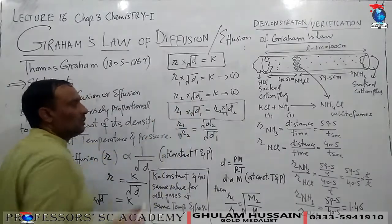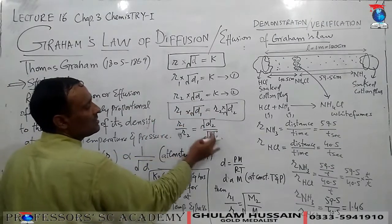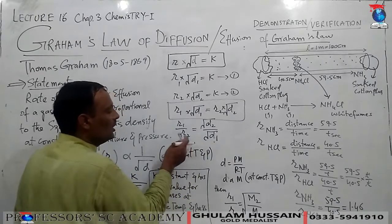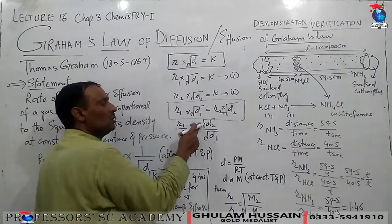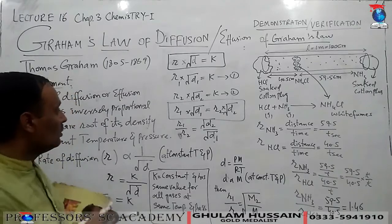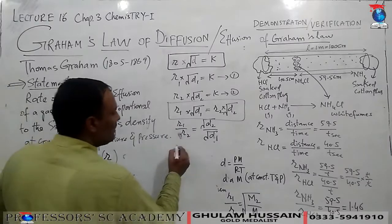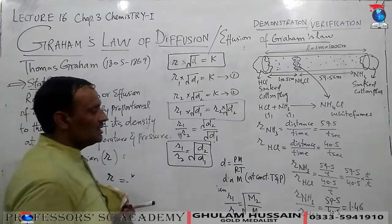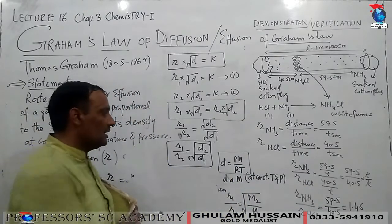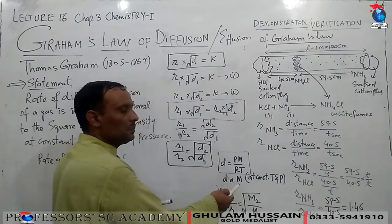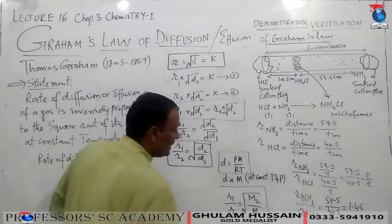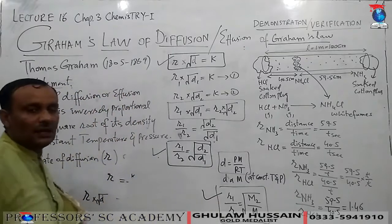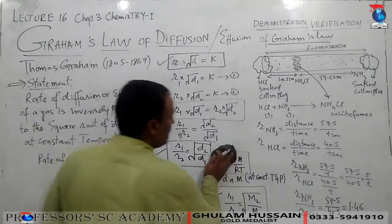Setting equation 1 equal to equation 2, the rate of diffusion remains inversely proportional to the square root of its density. This gives us: r1/r2 = √(d2/d1). We can also combine this using the general gas equation — density = PM/RT — so at constant temperature and pressure, density is directly proportional to molecular mass. Therefore we can substitute molecular masses for densities. These are all mathematical forms of Graham's Law.